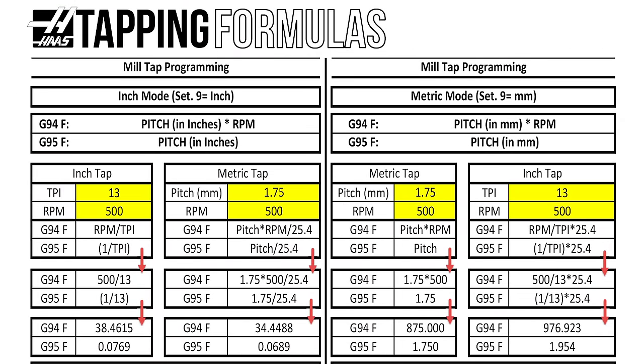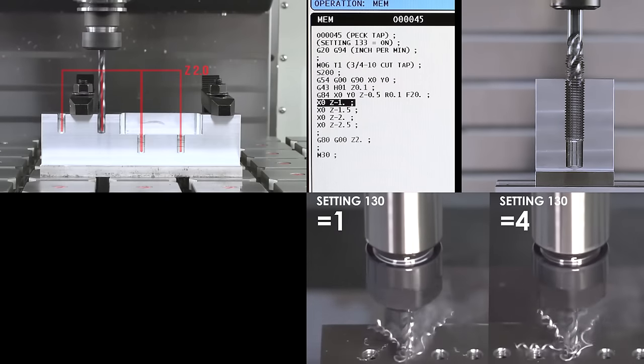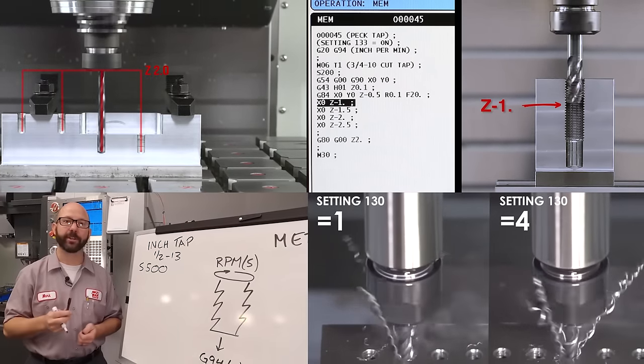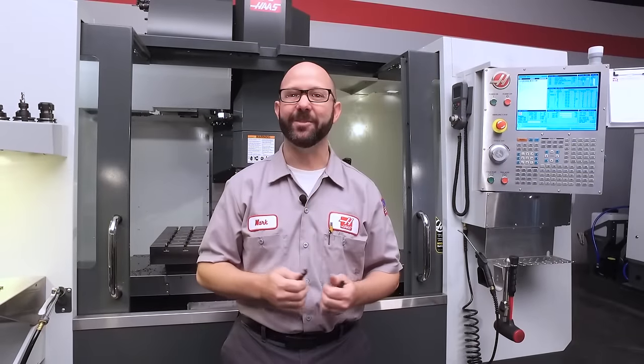We've also included links to videos that cover clearance planes, pec tapping, tapping faster with setting 130, and tapping in inch mode. Be sure to subscribe to these videos so you don't miss any of these tips as they're made. That's it, and thanks for watching this Haas Tip of the Day.